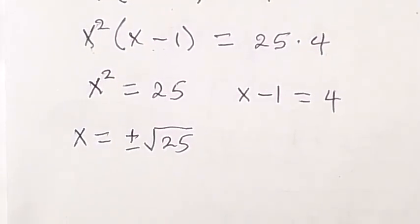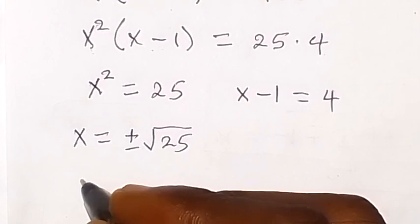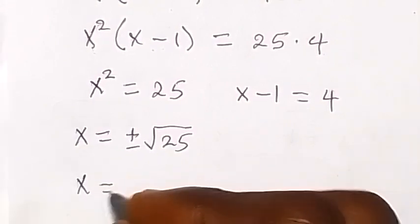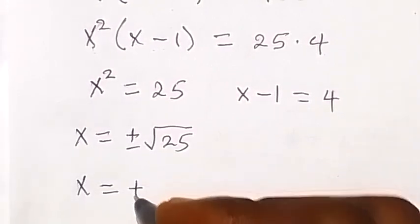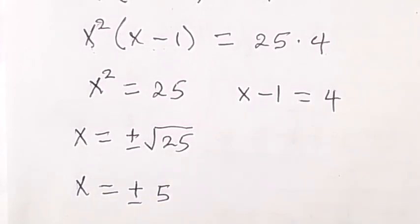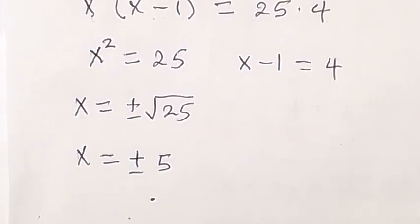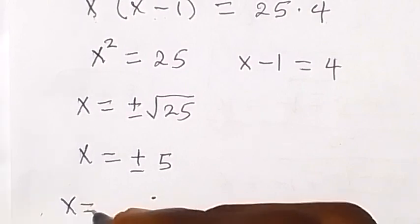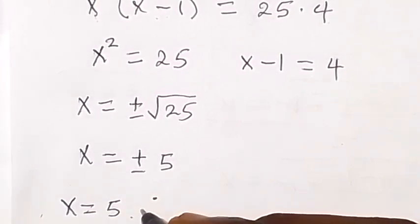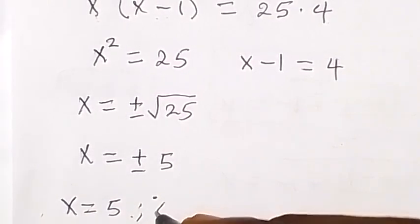Because anytime we take square root we have two possible solutions, plus or minus. So here we can see x equals to plus or minus 5, which are two possible answers there.